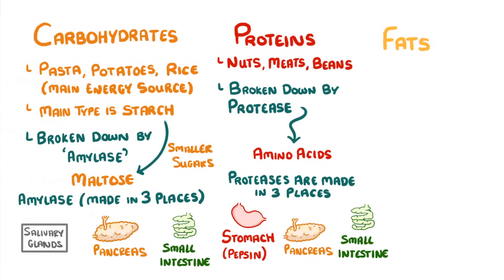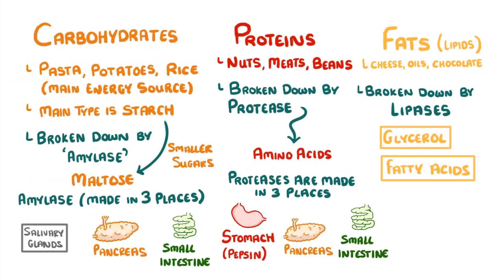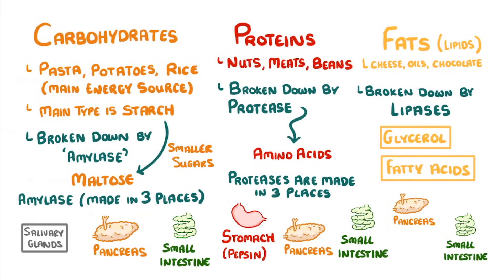And finally, we have fats, which we sometimes call lipids. We find lipids in foods like cheese, oils and chocolate, and they're broken down by lipases into both glycerol and fatty acids. These lipase enzymes are only produced in the pancreas and small intestine.